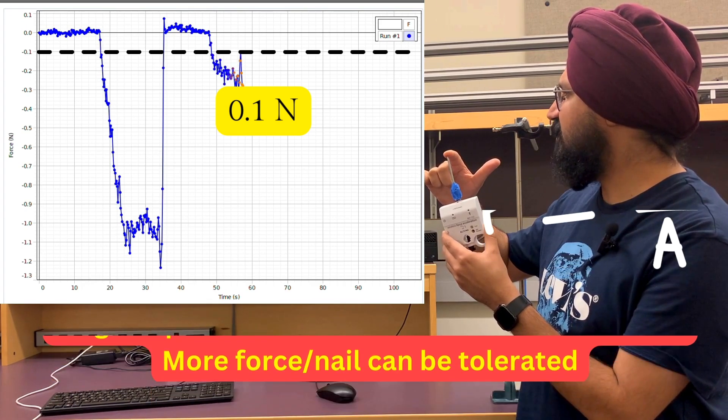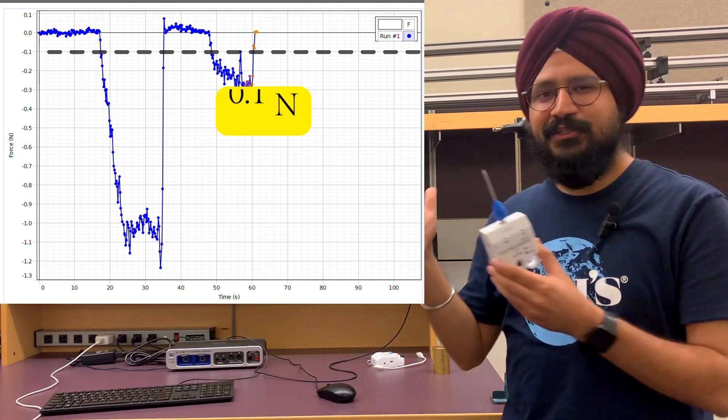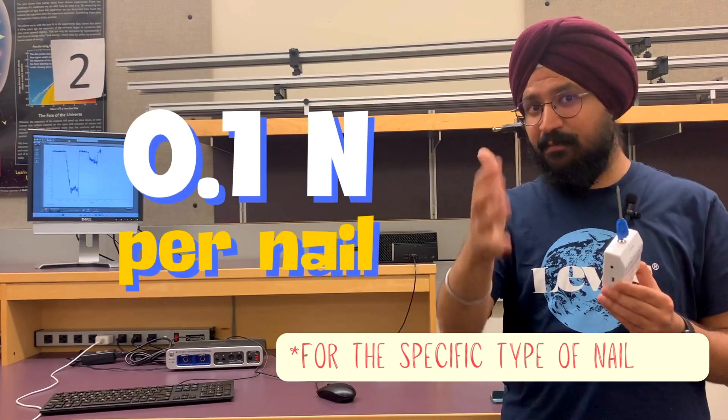And it's definitely in the ouch zone. So, I would say our target is about 0.1 newton per nail.